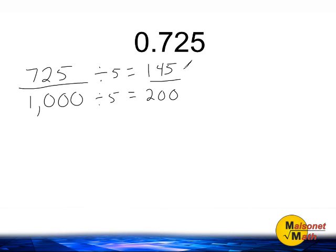And we can reduce 145 over 200 even further. And once again, both of these numbers are divisible by 5. So I'm going to divide both the top and the bottom by 5 once again. 200 divided by 5 is equal to 40. And 145 divided by 5 is equal to 29. So now we have the fraction 29 over 40.